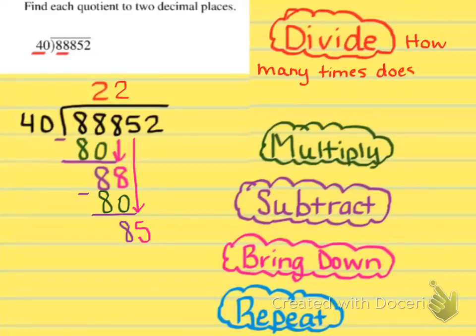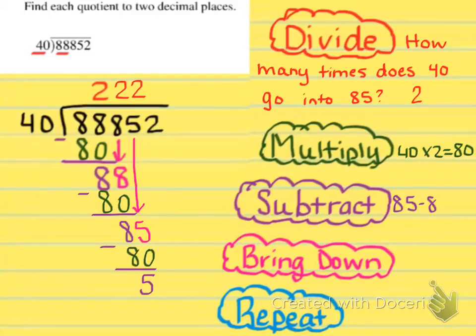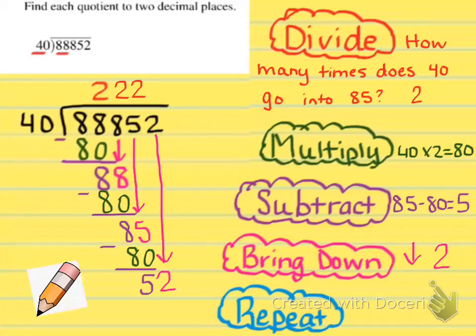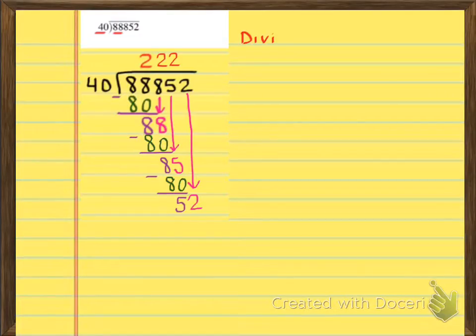Now after we've brought down the 5, we're going to say how many times does 40 go into 85? Well, it goes in twice because 40 times 2 is still 80. So we're going to go ahead and multiply, subtract, bring down, and then repeat. So right now you're at 2, 2, 2 for your answer. And notice how I put the first 2 over the second 8. That's because 40 times 2 is 80. So you don't want to make a mistake and put that first 2 over the first 8 because that would be saying that 40 goes into 8 two times, which is incorrect.